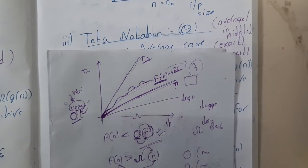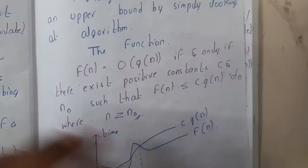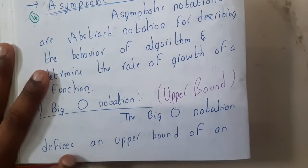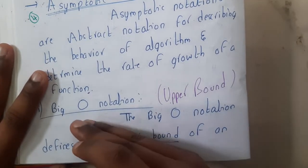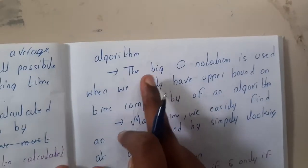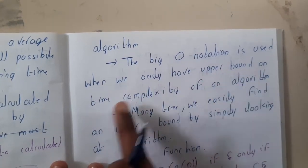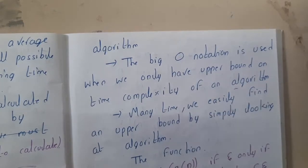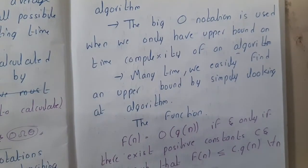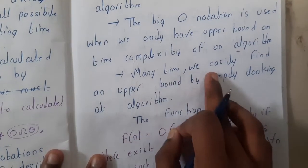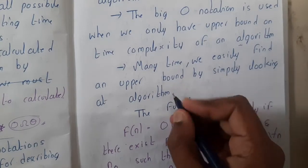Now let us go through the formal terminology. Big O notation defines an upper bound of an algorithm. It is used when we have an upper bound on time complexity — whenever you want to calculate the maximum time the algorithm might take. Many times we can easily find the upper bound by simply looking at the algorithm.